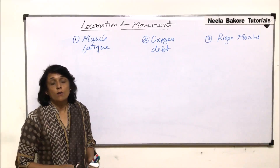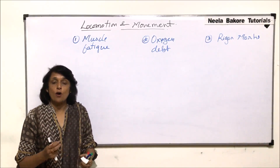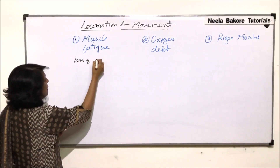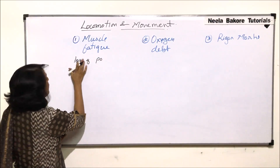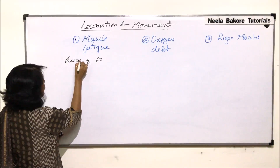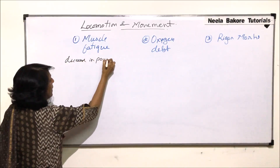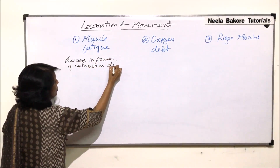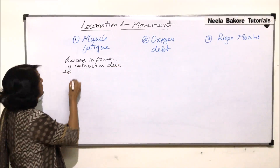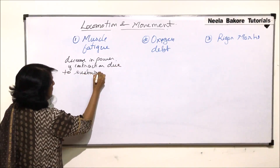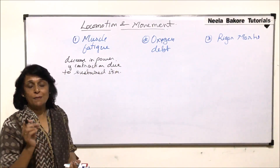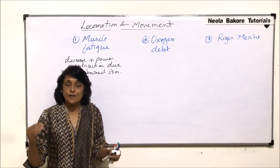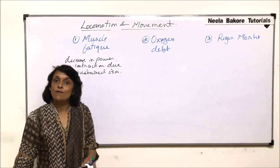When we talk about muscle fatigue, what exactly happens or how we define it: it is a loss of power, or we can say a decrease in the power of contraction, due to sustained stimulus. That means if the stimulus is continuously going on and the muscle has to contract for a long period of time, then the condition known as muscle fatigue is caused.